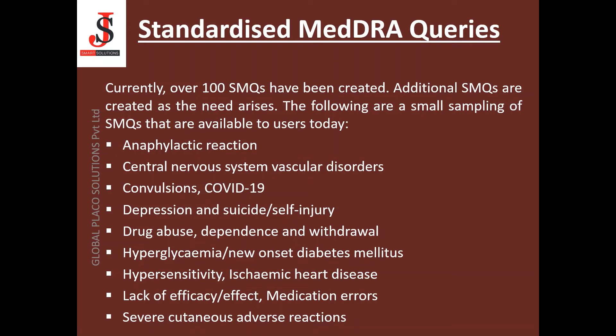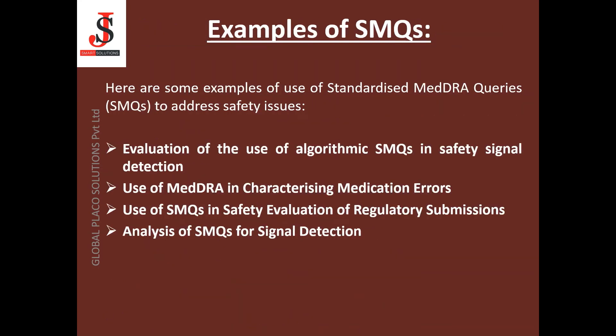The following are a small sampling of SMQs available to users today: anaphylactic reaction, central nervous system vascular disorders, convulsions, COVID-19, depression and suicide/self-injury, drug abuse and dependence or withdrawal, hyperglycemia or new onset of diabetes mellitus, hypersensitivity, ischemic heart disease, lack of efficacy or effect, medication errors, and severe cutaneous adverse reactions. Sometimes asked in interviews — what are examples of SMQs or what is the significance of having an SMQ? Uses include: evaluation of algorithmic SMQs in safety signal detection, use of MedDRA in characterizing medication errors, use of SMQs in safety evaluation of regulatory submissions, and analysis of SMQs for signal detection.